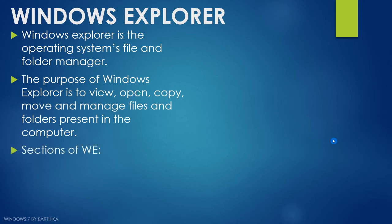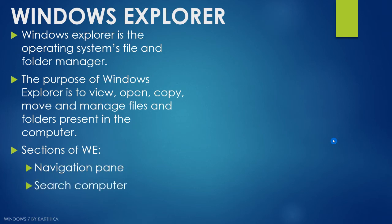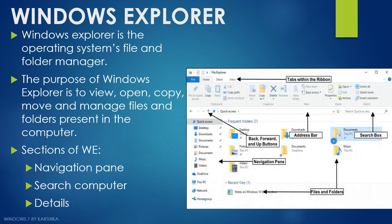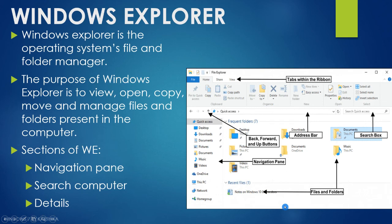Windows Explorer has a few sections: the navigation pane, the search box, and the details pane. The navigation pane is used to navigate between folders inside your system. The search box is used to search for a particular file or folder. The details pane at the bottom shows details about the selected file or folder.